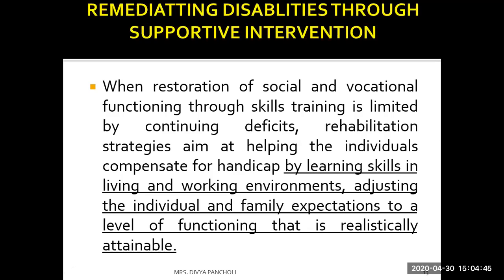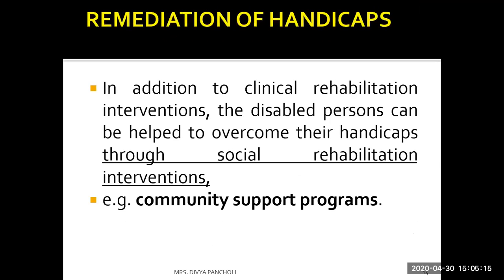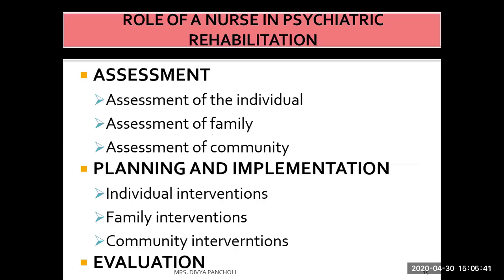For patients with chronic schizophrenia, skill training may not be effective because they are not able to learn. For these patients, support from family members is the third step approach. The fourth step is remediation of handicaps: in addition to clinical rehabilitation interventions, the disabled person can be helped to overcome handicaps through social rehabilitation interventions and community support groups and organizations.